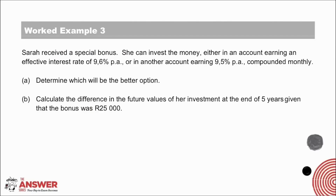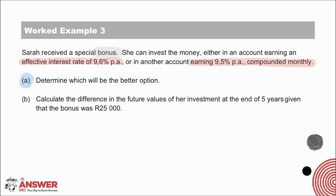In this example, Sarah has received a bonus and is given two investment options: either an account earning an effective interest rate of 9.6%, or another account earning 9.5% per annum compounded monthly. Part A asks which is the better option for Sarah. What is useful to realise is that we cannot just compare 9.6% with 9.5%, since one is an effective rate and the other a nominal rate. Pause here and give it a go before we move on.